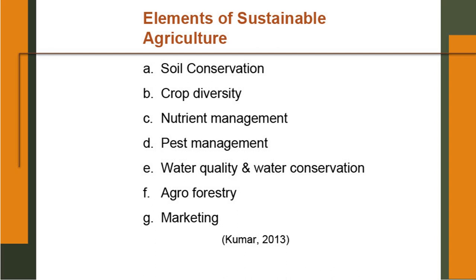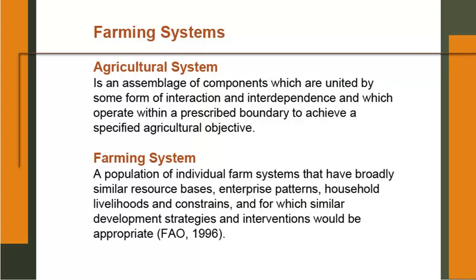Now we come to the exact topic — farming system, a kind of sustainable agricultural system, sustainable production system. What is an agricultural system? It is an assemblage of components which are united by some form of interaction and interdependence and which operate within a prescribed boundary to achieve a specified agricultural objective. Farming system: a population of individual farm systems that have broadly similar base resources, enterprise patterns, household livelihoods and constraints and for which similar development strategies and interventions would be appropriate. This is defined by FAO — Food and Agriculture Organization 1996.